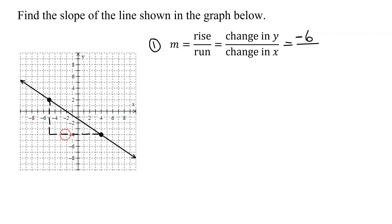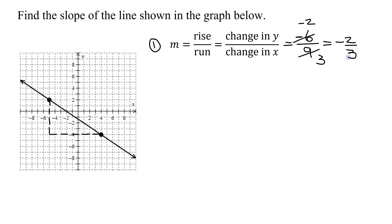And what's the run? 1, 2, 3, 4, 5, 6, 7, 8, 9. So it's negative 6 divided by 9. Well, that'll reduce. 3 divides into 9 three times, and 3 divides into negative 6 negative 2 times. So my slope is negative 2 thirds. So m equals negative 2 thirds.